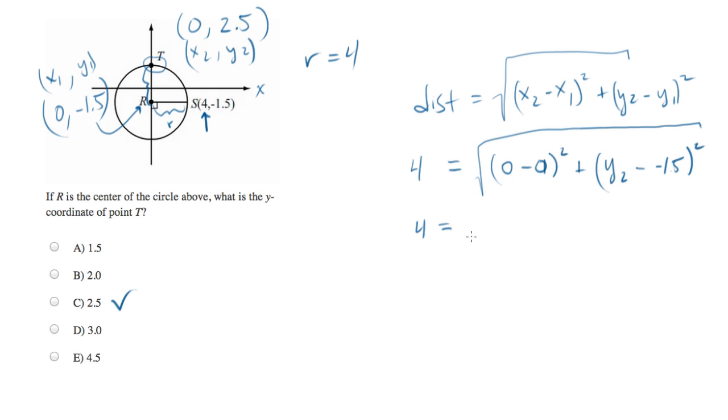If we simplify this a little bit, we end up with 4 equals y2 minus negative 1.5. Let's add negative 1.5 to both sides. And what we'll end up with is 2.5 equals y2, which is the same result.